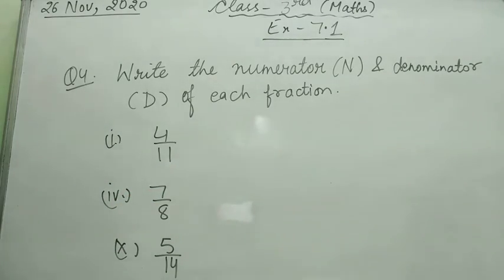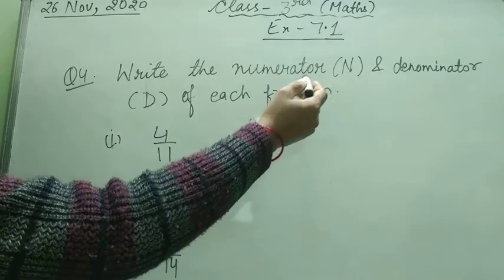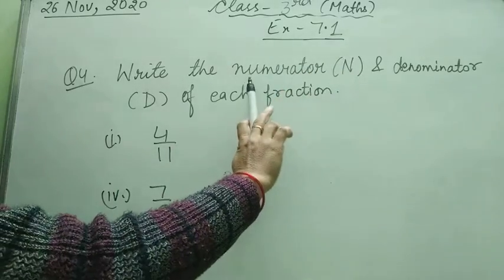The spelling of numerator and the spelling of denominator: D-E-N-O-M-I-N-A-T-O-R.